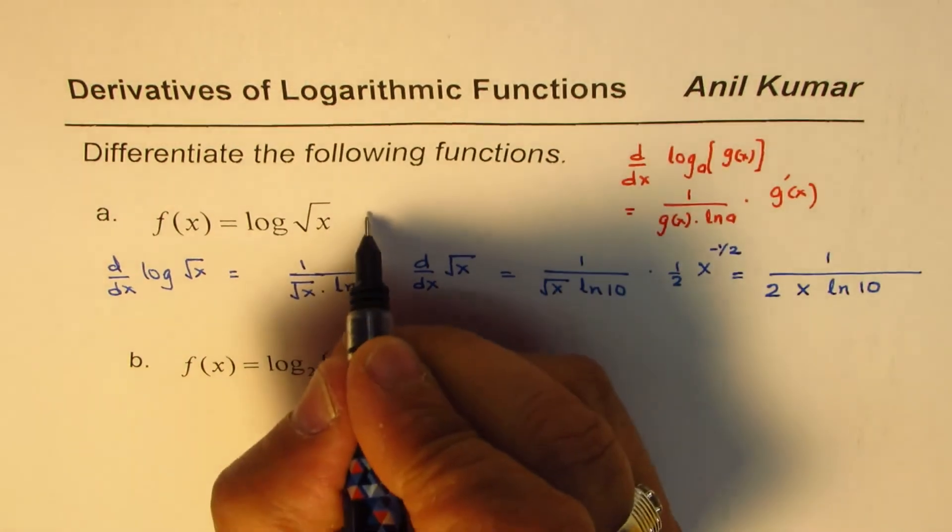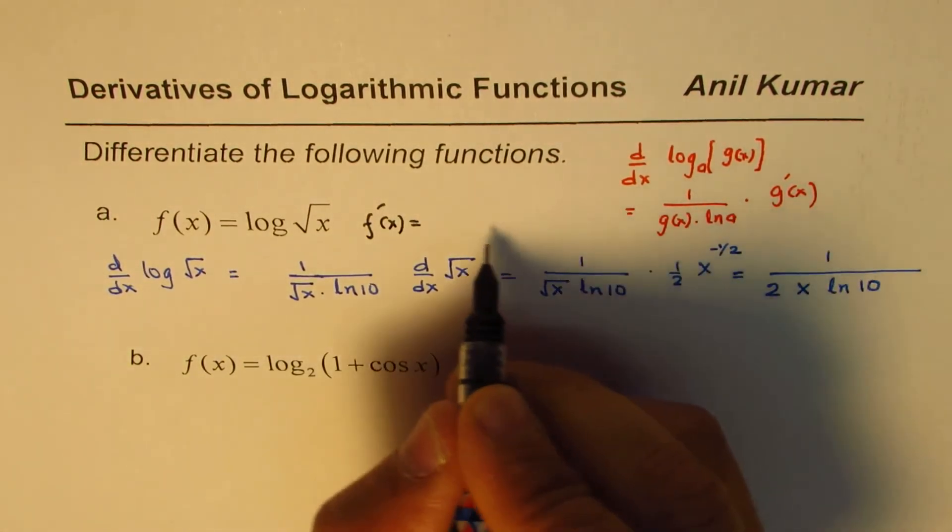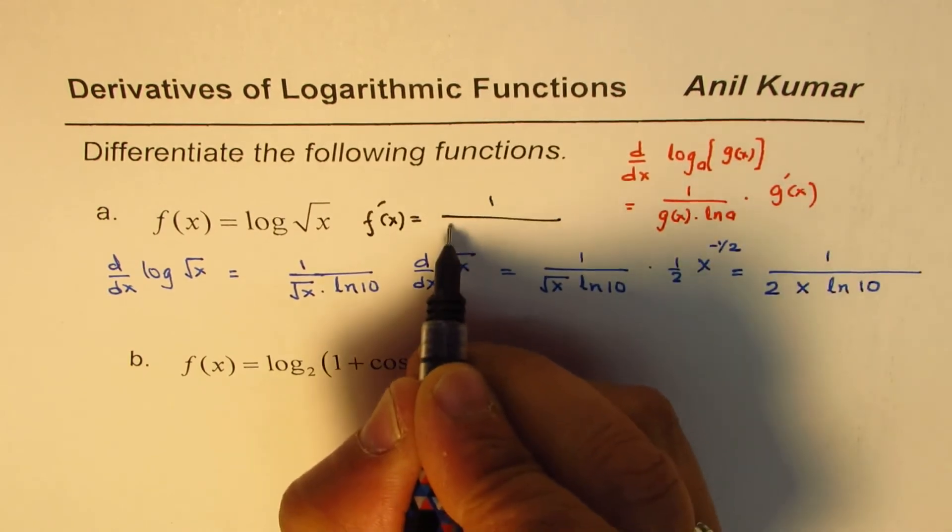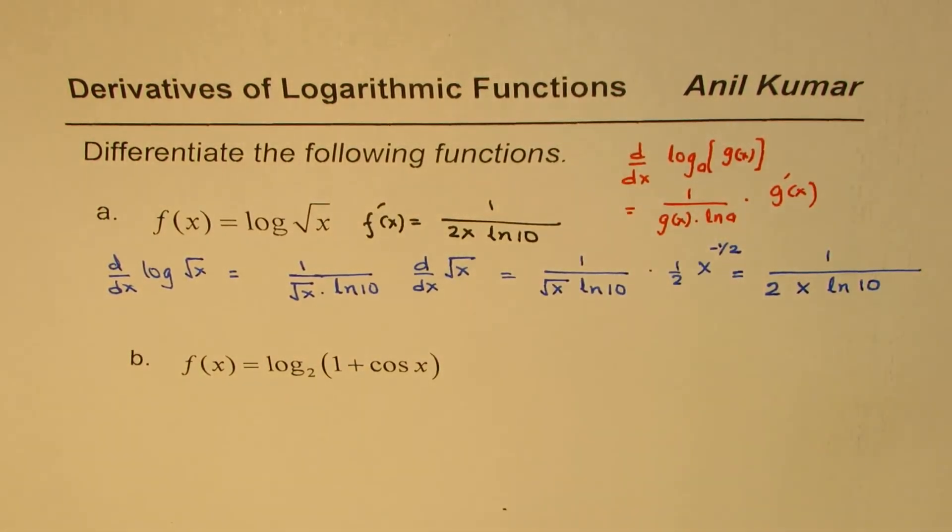So, let me rewrite this here. So, we say f'(x) equals to all this, which is 1 over 2x ln 10.